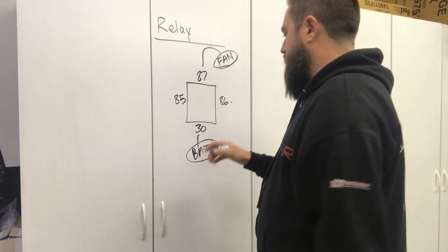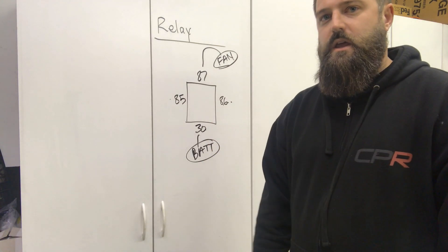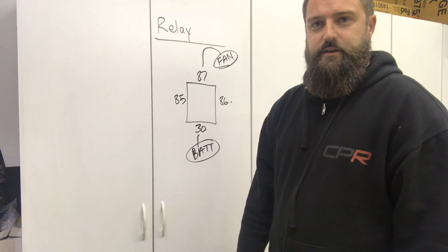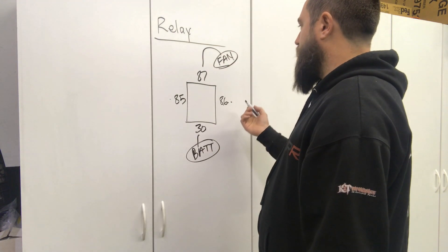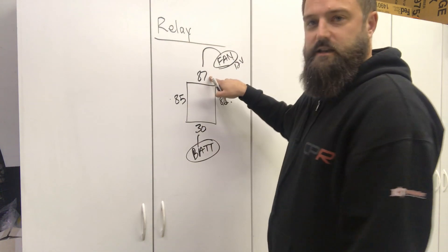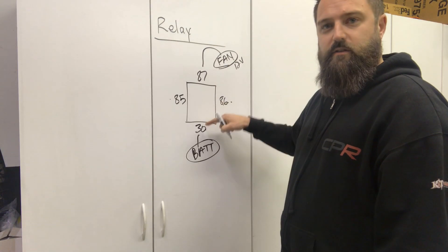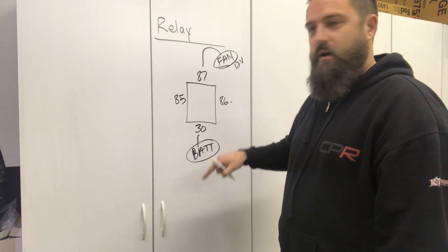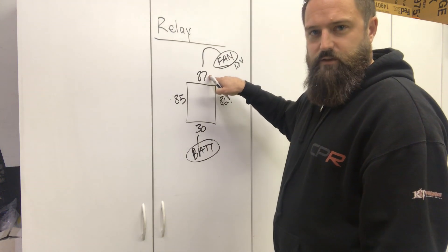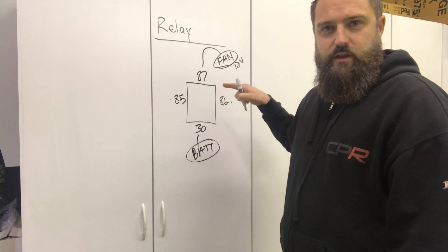A typical Bosch relay has position 30 and 87. In 87, we normally put our powered device, the 12-volt part of that device. You can also use a relay to send ground from 30 to 87. Whatever you have on 30 is going to go through to 87 once the coil is energized.